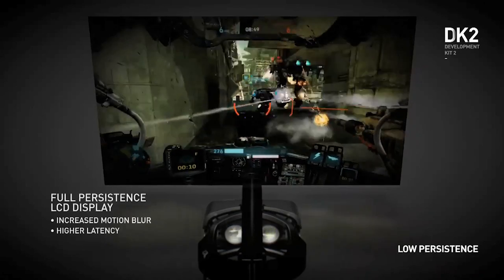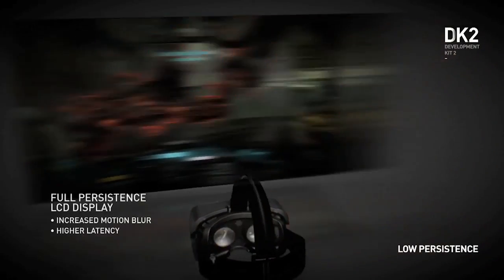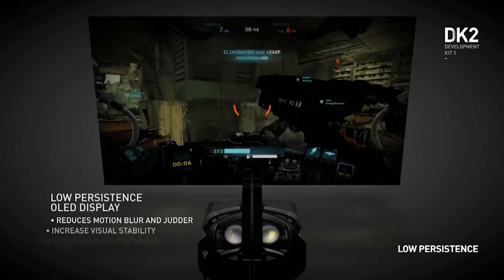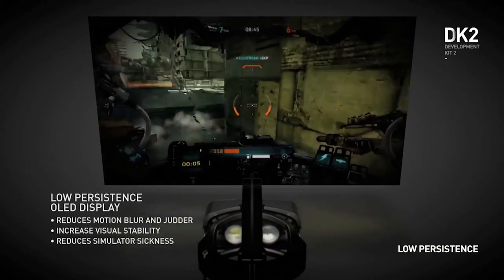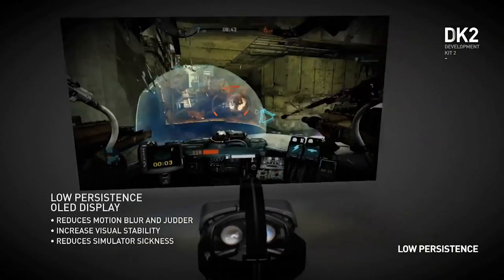And one place where we're fairly sure that Rift is winning is with a technology they're using called low-persistence display. This allows the screen to shut off for tiny fractions of a second between new images and has been reported to dramatically reduce motion blur, judder, and motion sickness in users.